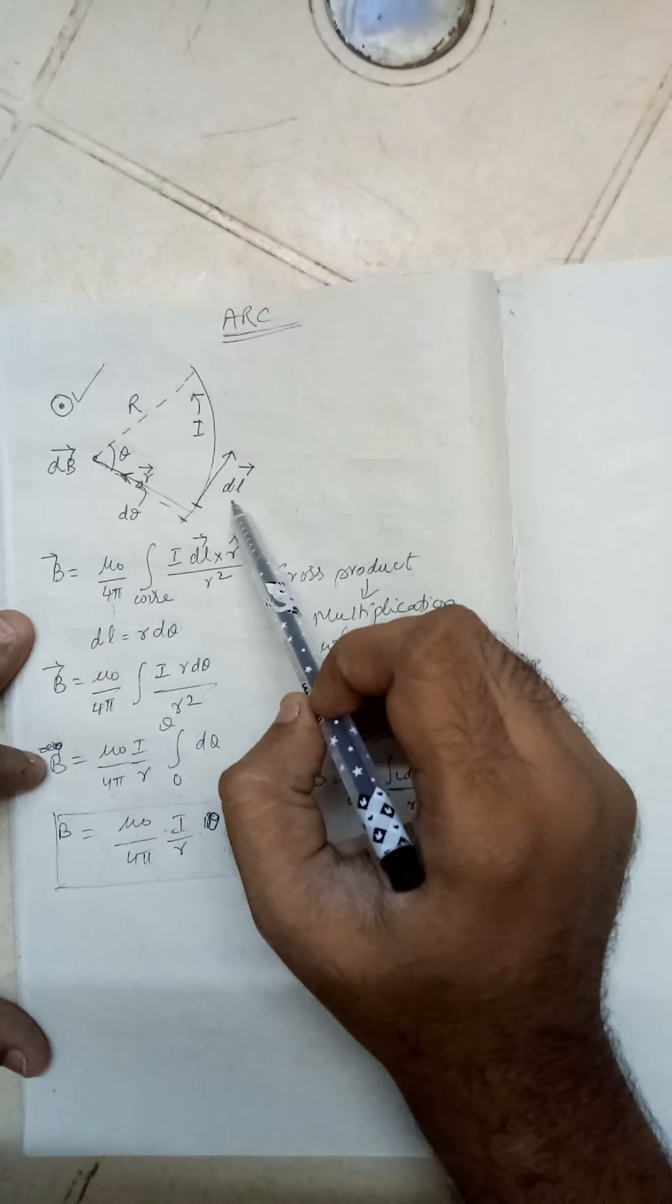So in general, my B vector will be equal to mu_0 by 4 pi, integration i dl cross r by r square. This r is a unit vector.